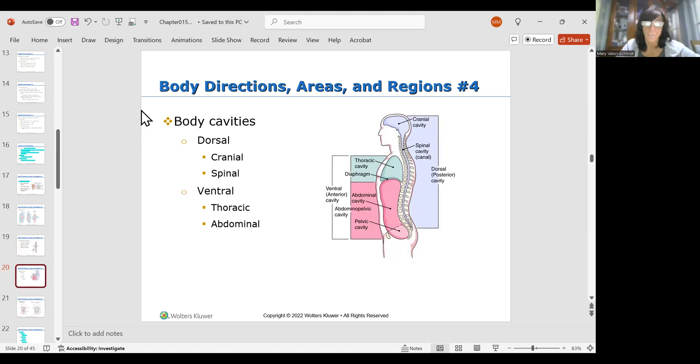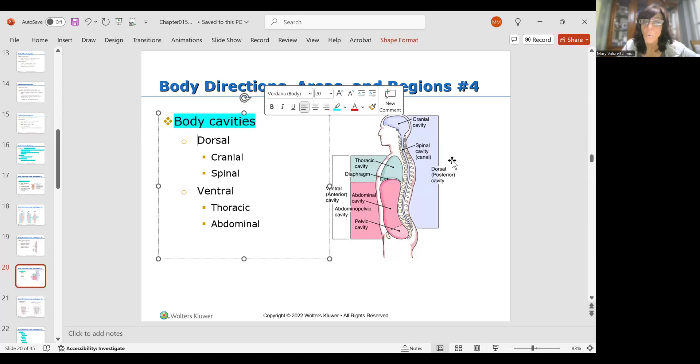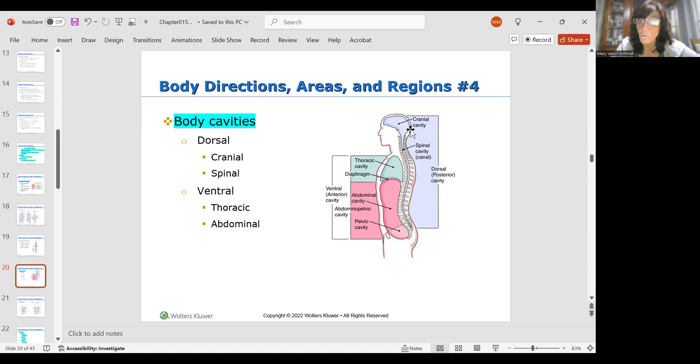Then you have body cavities. You need to know these two. Of the body cavities, you have the dorsal cavity which is the back, which contains the cranial cavity and the spinal cavity. Then you have the ventral or the anterior cavity which has two smaller cavities: the thoracic, where your lungs and heart are, and your abdominal, which entails all of your abdominal organs, your intestines, stomach, spleen, liver, pancreas and all that good stuff. Make sure you know the body cavities.